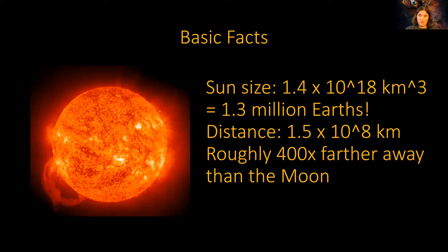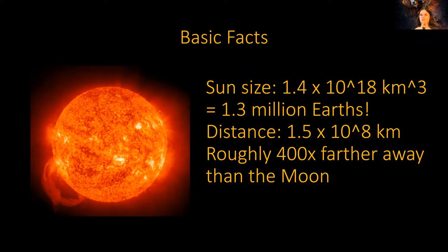The reason we measure in degrees when looking up at the sky is because sizes vary tremendously depending upon how far away they are. So in astronomy, when we look at something in the sky, we don't measure by how long it is — we measure by its angular size.